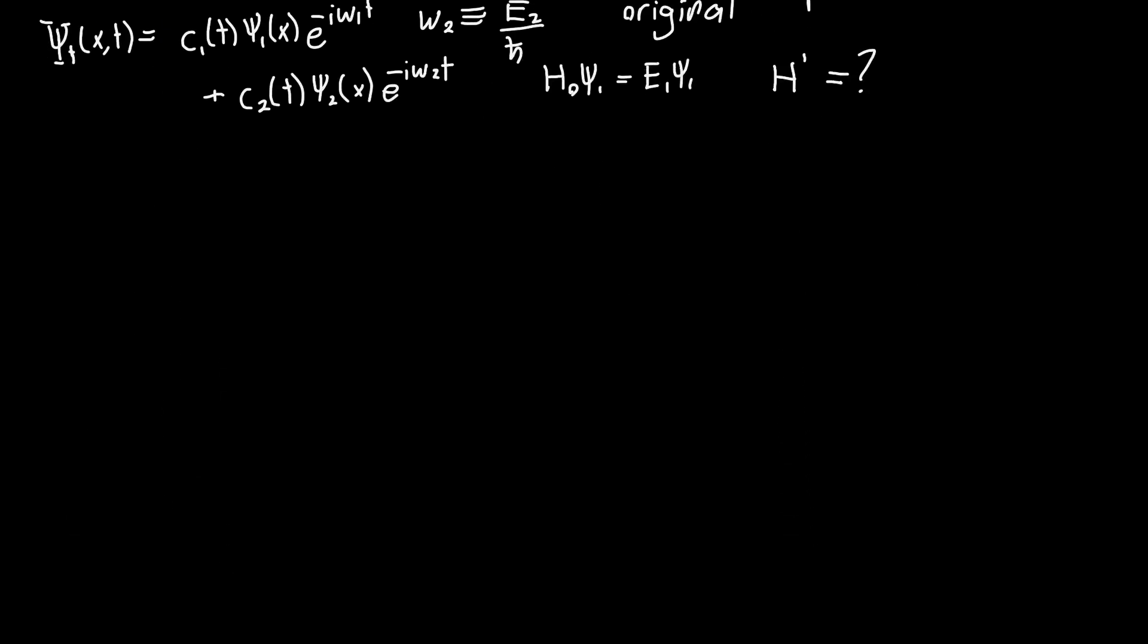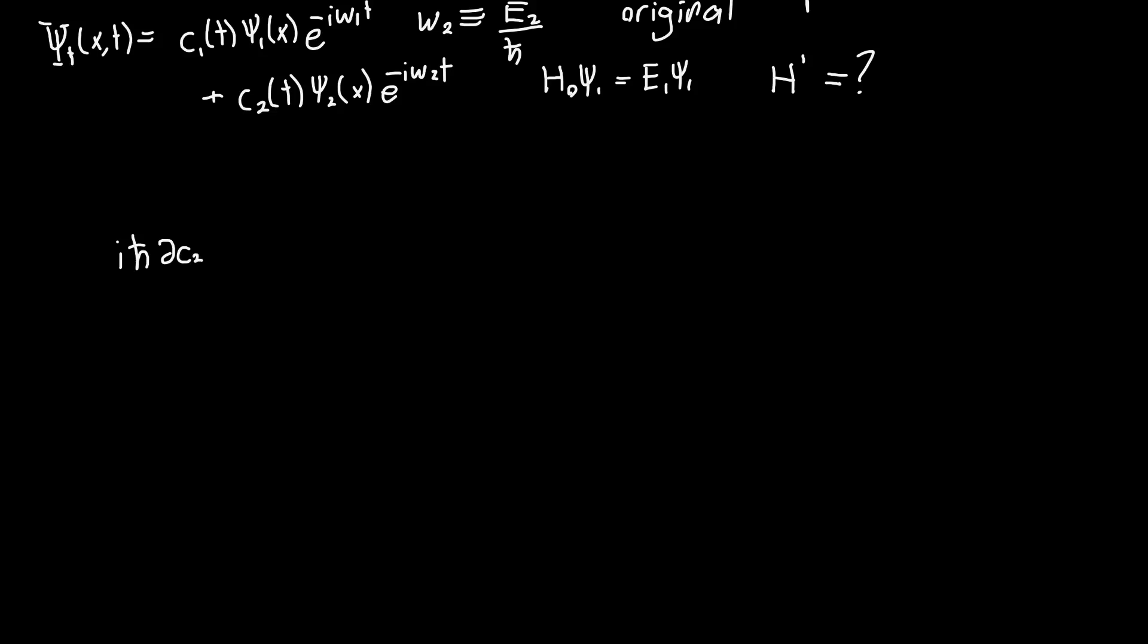So if you plug everything in, you'll get something very similar to what we got last time. So this should be ih-bar dc1/dt e^(-iω1t) ψ1, plus ih-bar dc2/dt e^(-iω2t) ψ2. But now these are, instead of being equal to zero, these are equal to the terms involving our perturbing Hamiltonian. And that's just H'c1 e^(-iω1t) ψ1, plus H'c2 e^(-iω2t) ψ2.